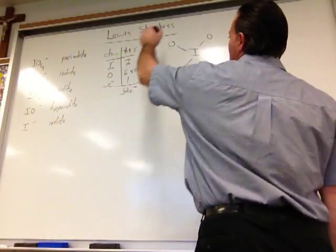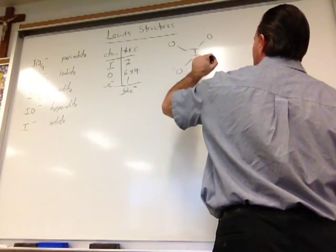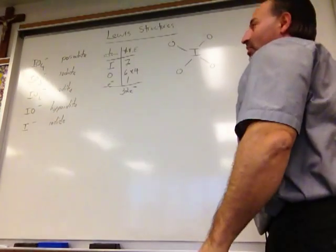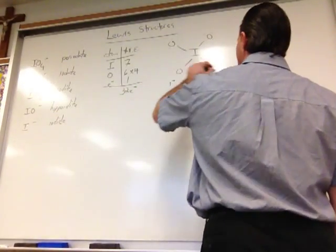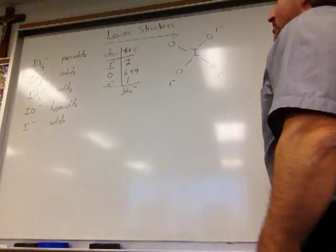And we're going to disperse them around the oxygen atoms. So 4 times 6 is going to give us 24. Notice how they're paired because the orbital is filled. And that's going to give us a minus 1 charge on each oxygen atom.